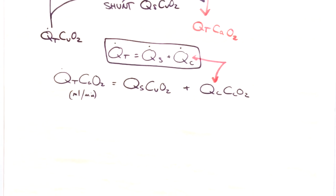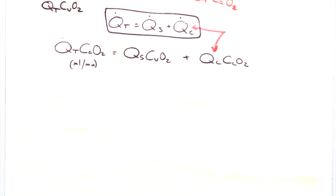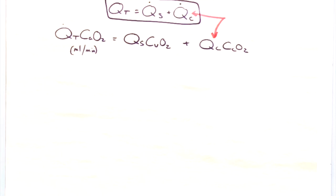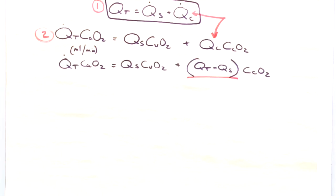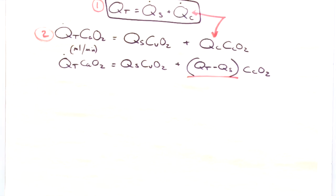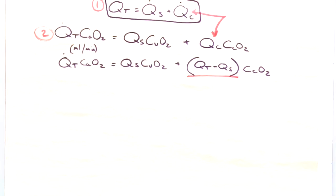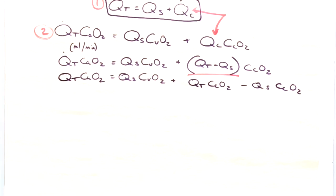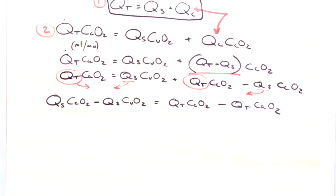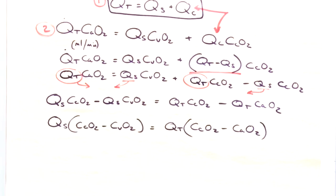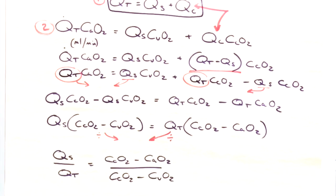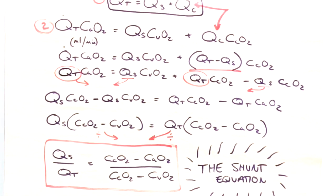To simplify things we want to get rid of this Qc term, which as you can see from the previous equation we can simply substitute in terms of Qt and Qs. All we've done is rearrange equation 1 and stick it into equation 2. Next we just multiply out the brackets, rearrange to get the Qs terms on the left and the Qt terms on the right, put it back into neat brackets, and divide through by the two terms on each side to leave us with the shunt equation.